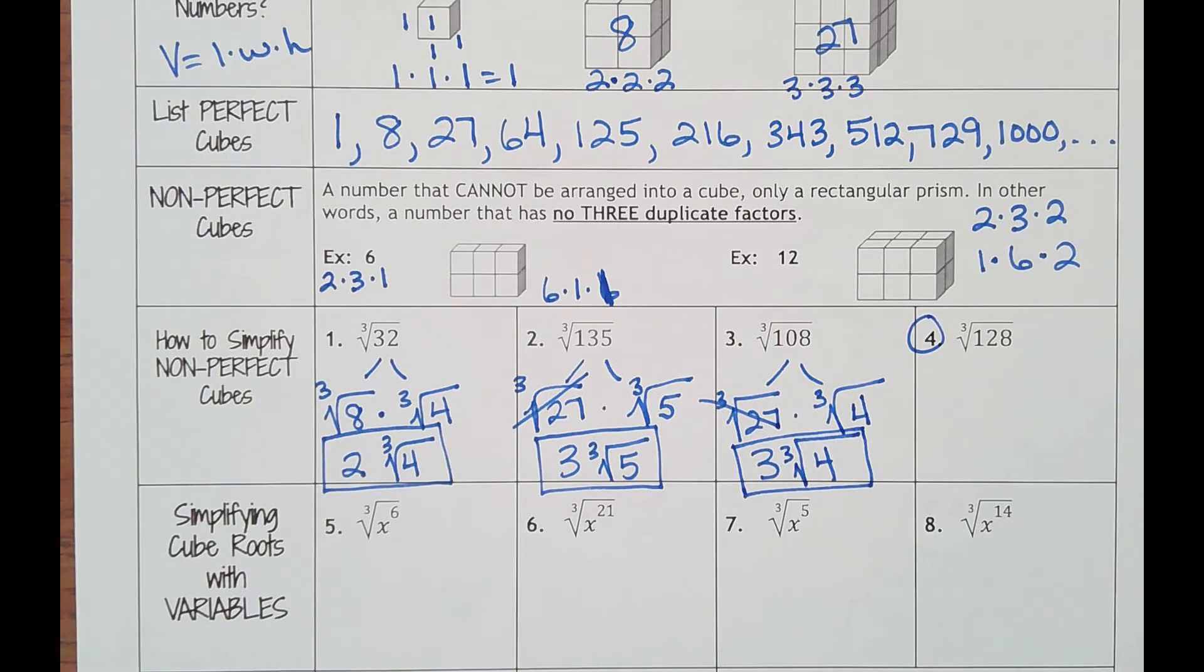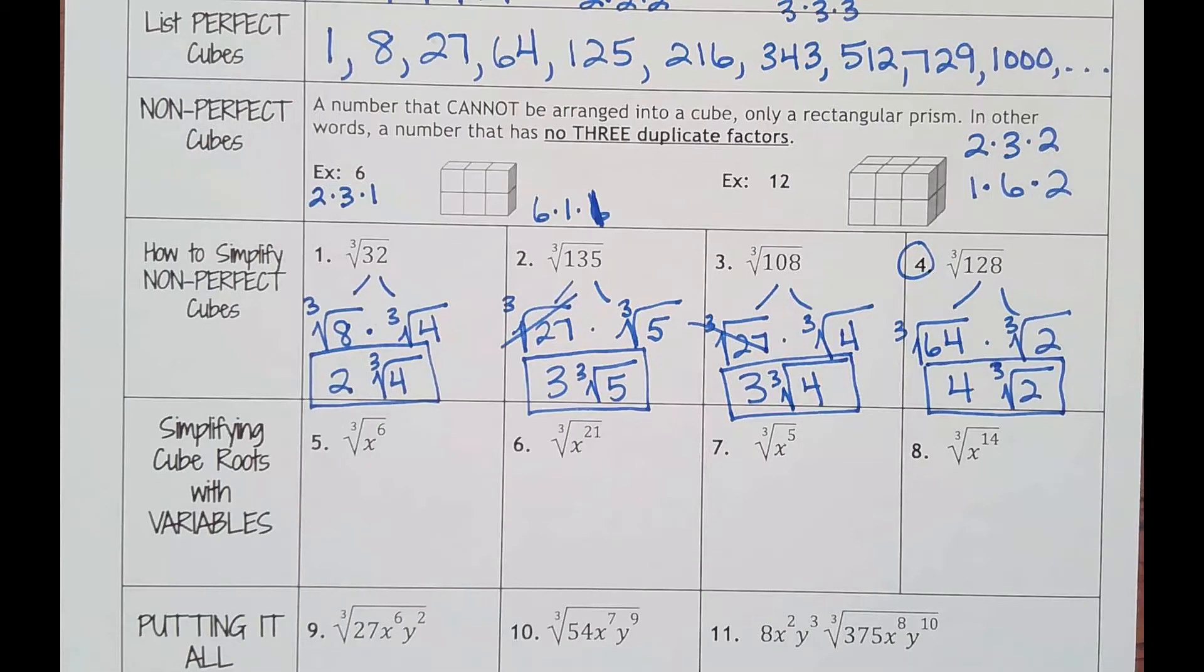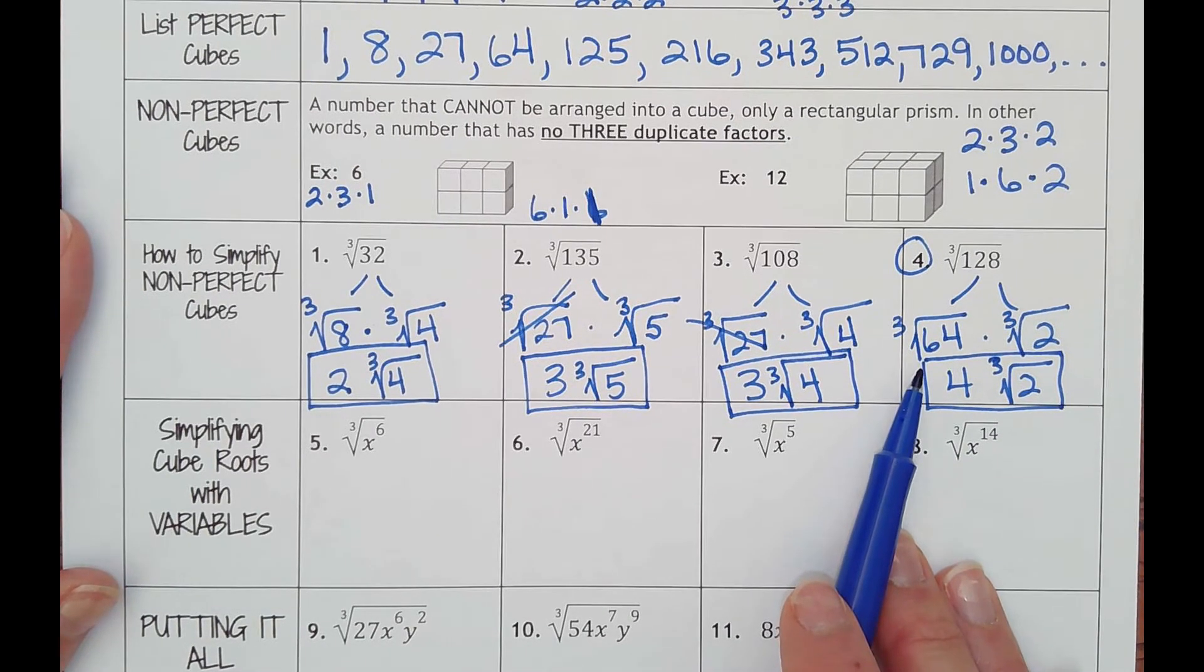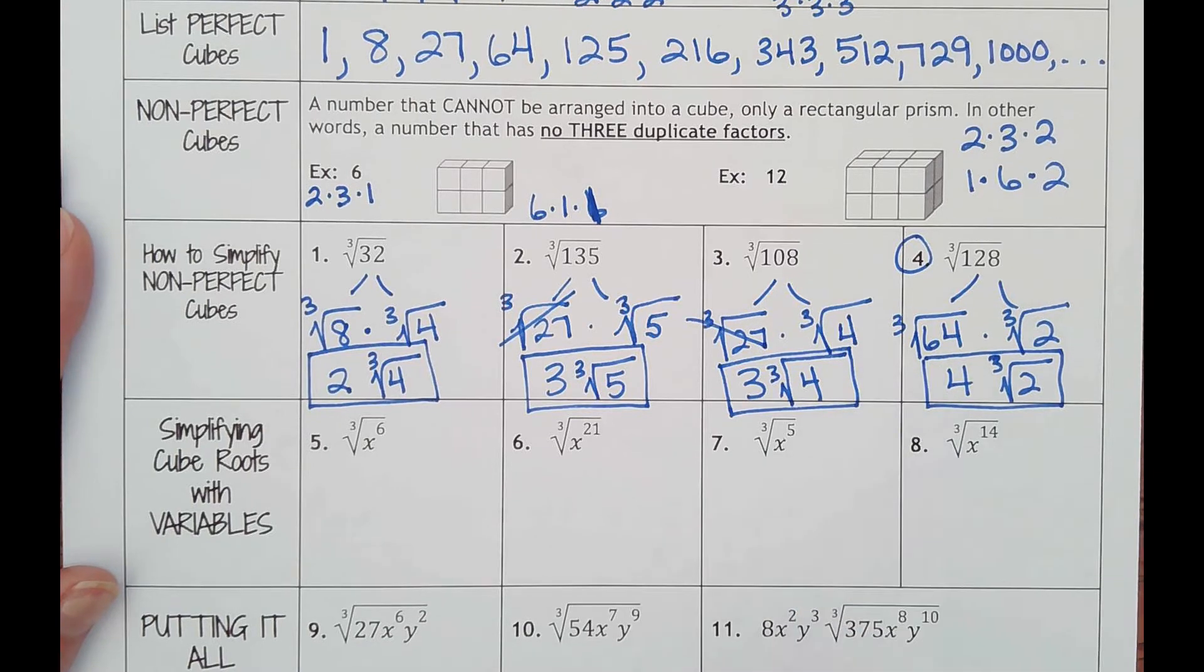Okay, once you pause and try number four. Your answer should be four cube roots of two, because our perfect cube in 128 is 64. Cube root of 64 is four.